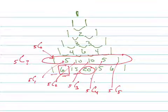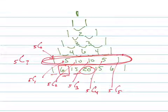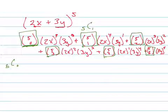So this row gives you the coefficients that we need: 1, 5, 10, 10, 5, 1. So this number is 1, this number is 5, this is 10, this is 10, this is 5, and this is 1.